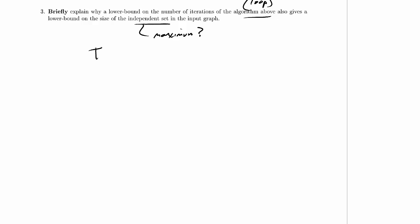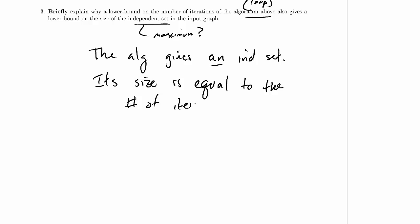So really, what's happening here is the algorithm gives an independent set, not necessarily the maximum. Its size is equal to the number of iterations, because one element is added to the solution on each iteration.